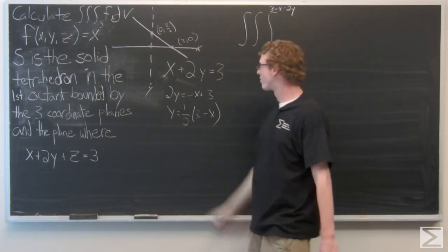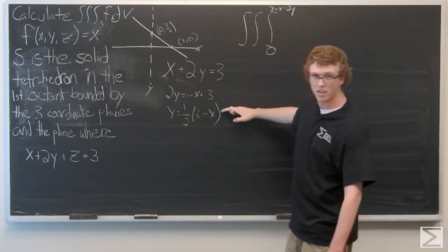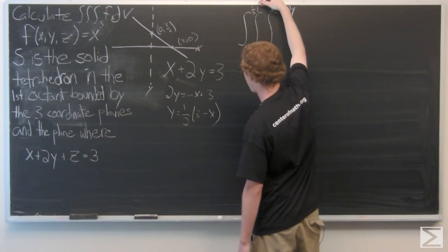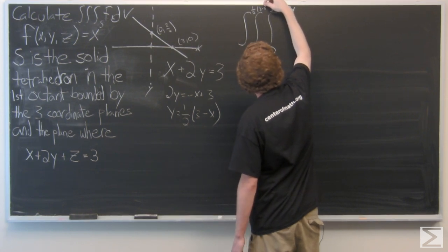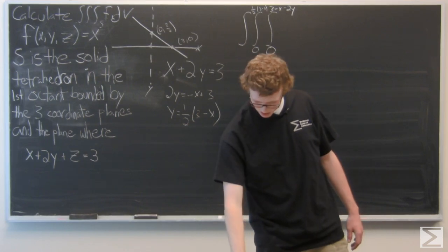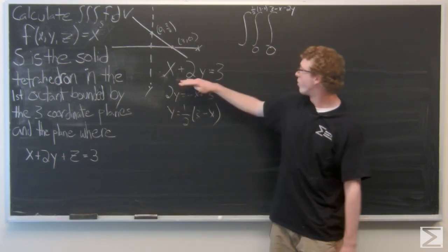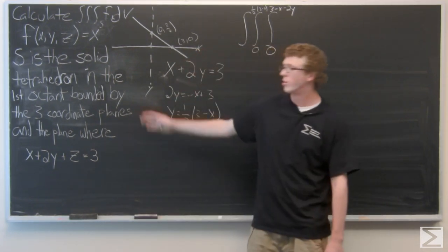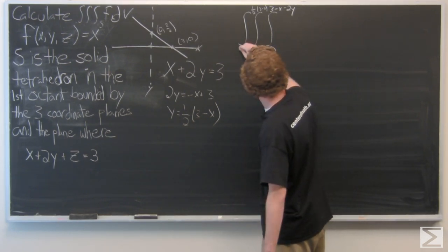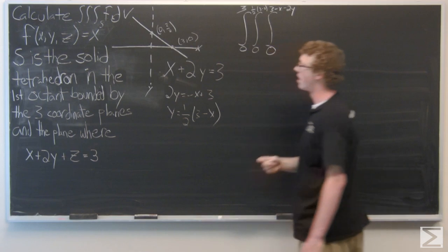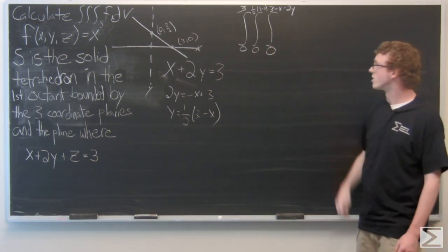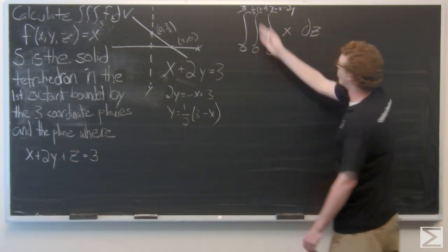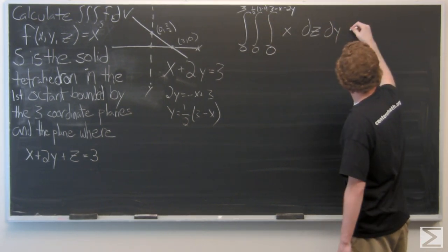Our lower bound for y is zero, and our upper bound is this function of x. For x, we set y and z equal to zero to get our upper bound of three, and our lower bound is just zero. Now we plug in the function, which is just x, and integrate — with respect to z first, then y second, then x third.